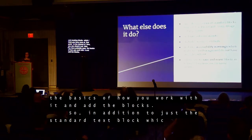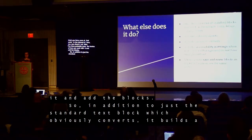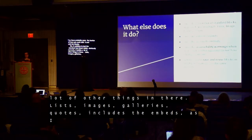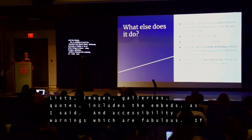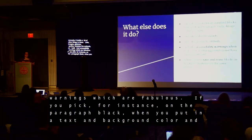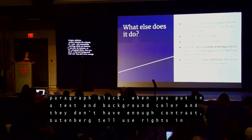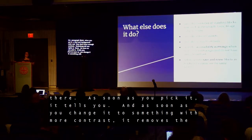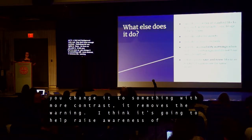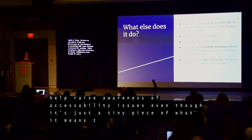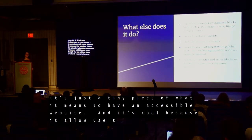In addition to the standard text block, Gutenberg builds a lot of other things in — lists, images, galleries, quotes. It includes column layouts, embeds, and even accessibility warnings, which are fabulous. When you pick a text color and background color that don't have enough contrast, Gutenberg tells you right there — and as soon as you change it to something with more contrast, it removes the warning. It also allows you to save and reuse blocks in multiple locations.